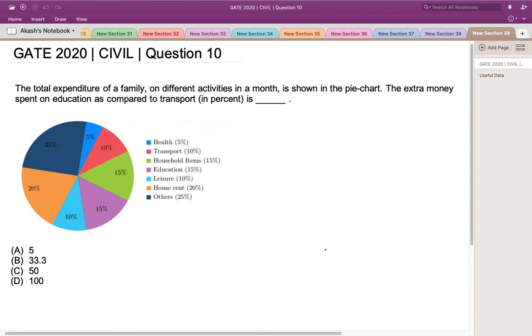Hello everyone, this is the question asked in GATE 2020 Civil Engineering Set 1. The total expenditure of a family on different activities in a month is shown in the pie chart. The extra money spent on education as compared to transport in percentage is...